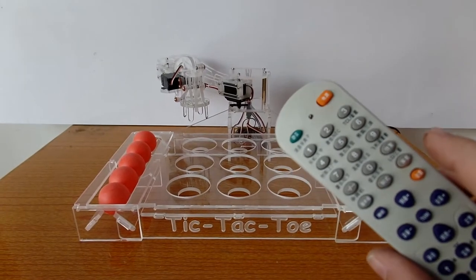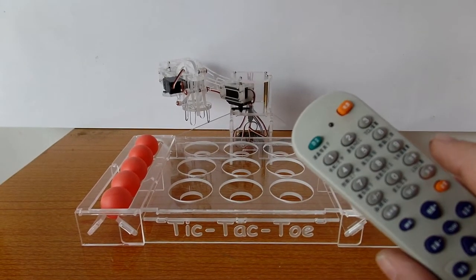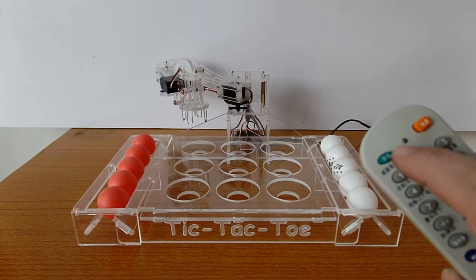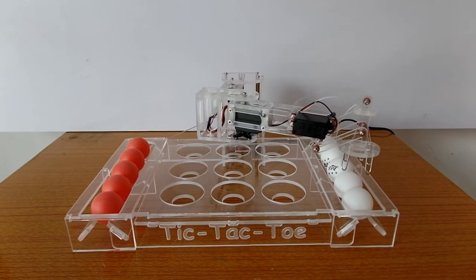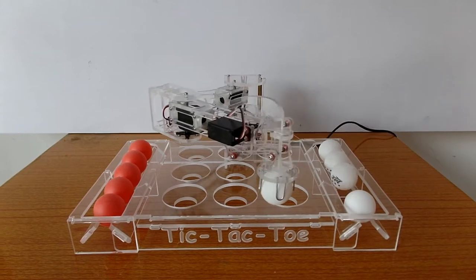This is my tic-tac-toe robot. I'm using a TV remote to control it. I'm just going to tell it to go put a ball in position 1. The white balls are mine, the red balls are the robot's.